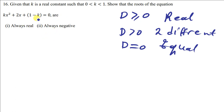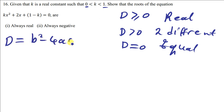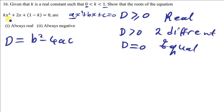We've been given that k ranges from zero to one, and we have to show that this quadratic equation has roots which are always real. We have to check if the discriminant is greater than zero. We know that D is given by b squared minus 4ac. Our a is the coefficient of x squared, b is the next coefficient, and c is the constant, since the quadratic equation has the format ax squared plus bx plus c equals zero. So the value of a is k, the value of b is 2, and the value of c is 1 minus k.